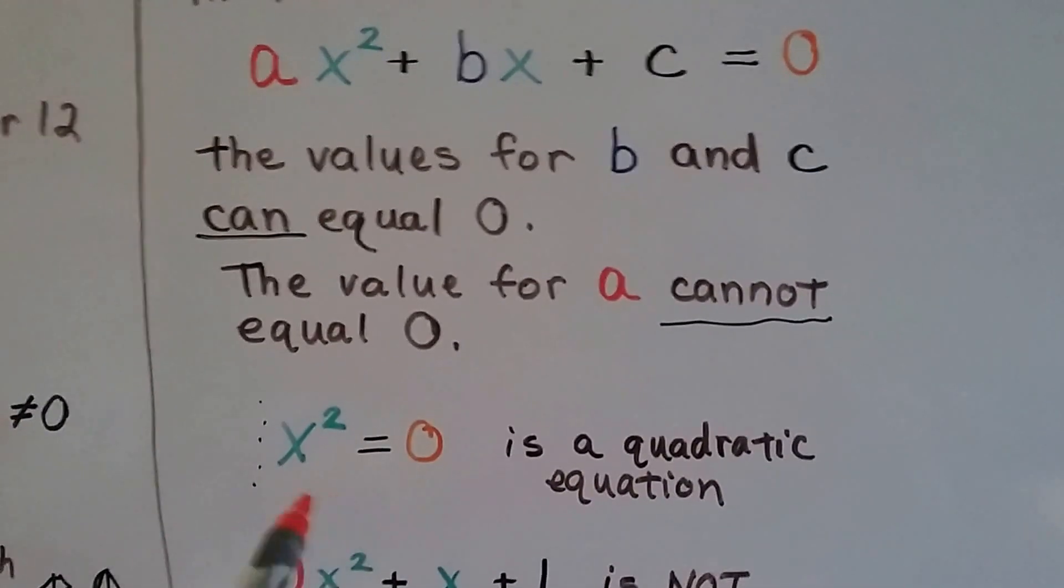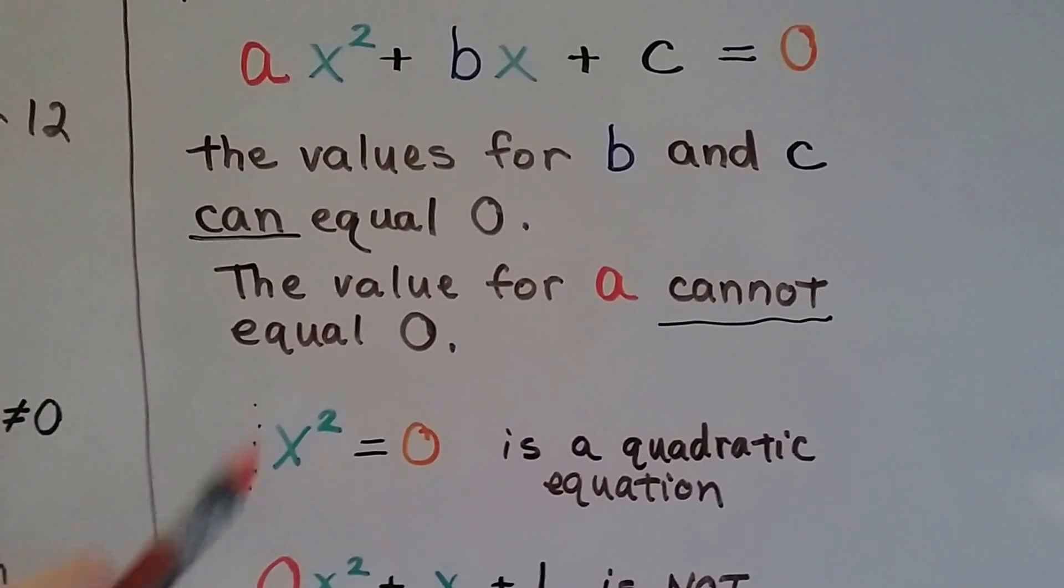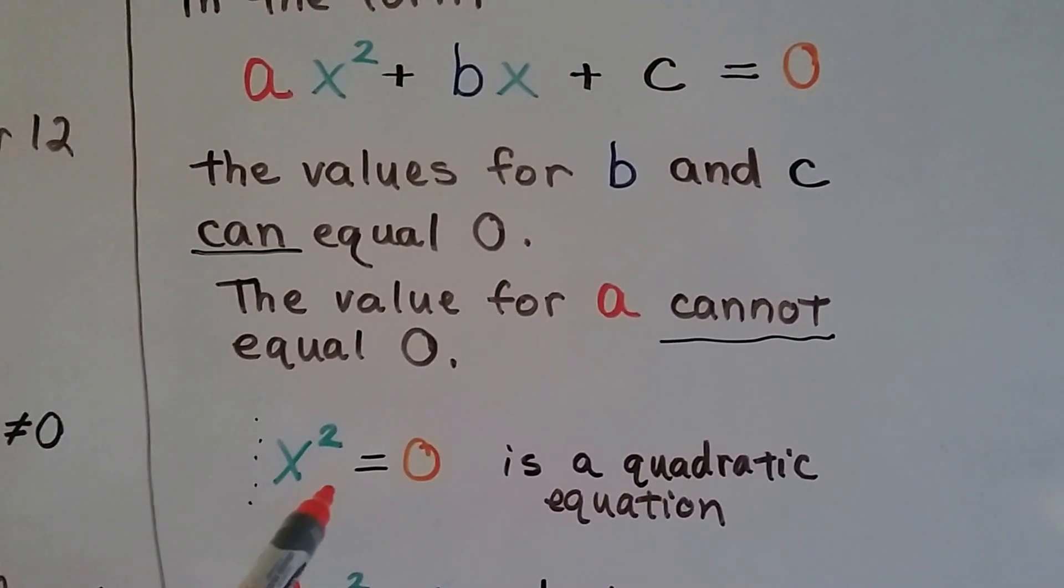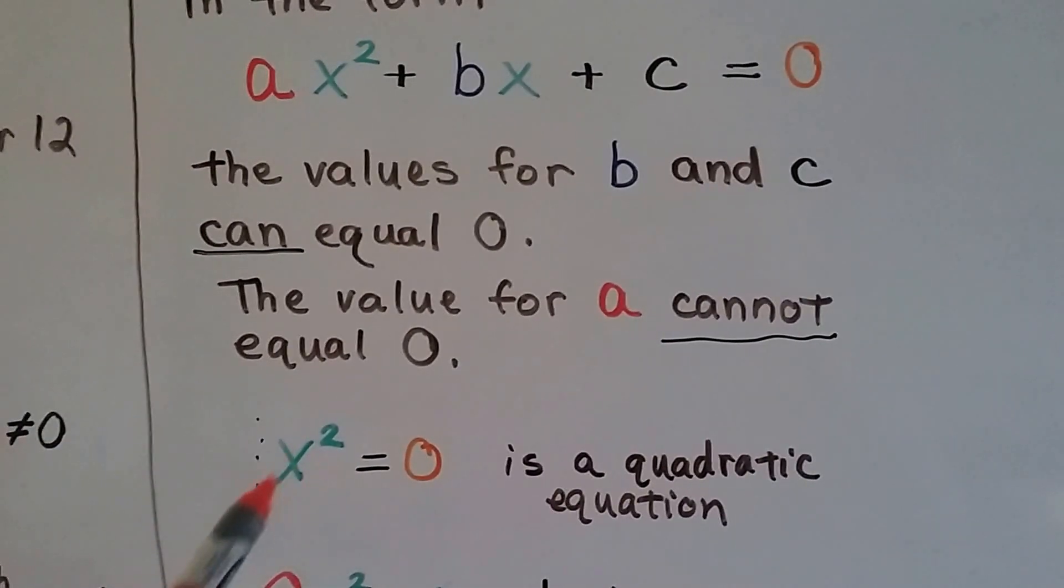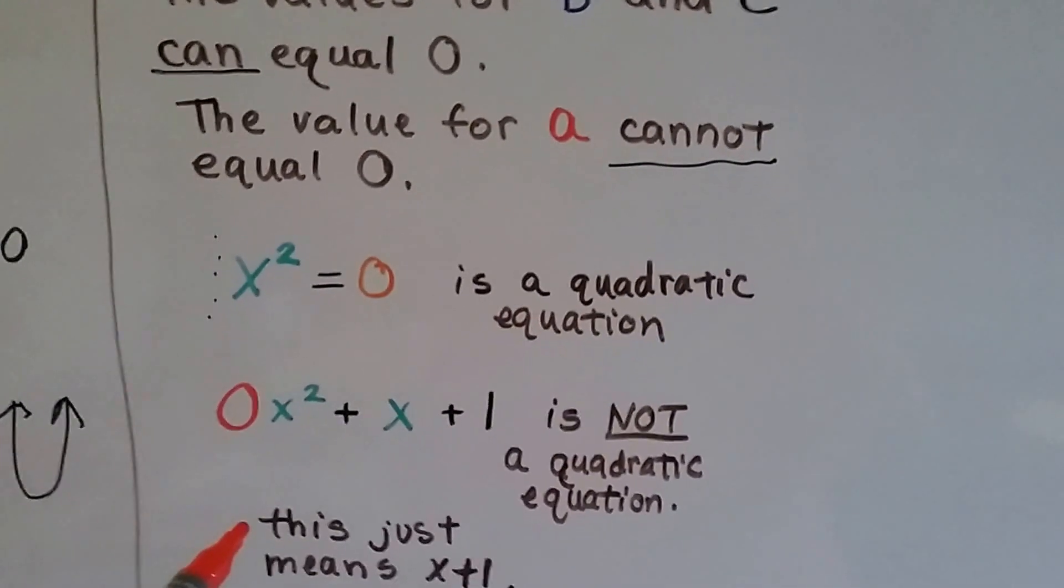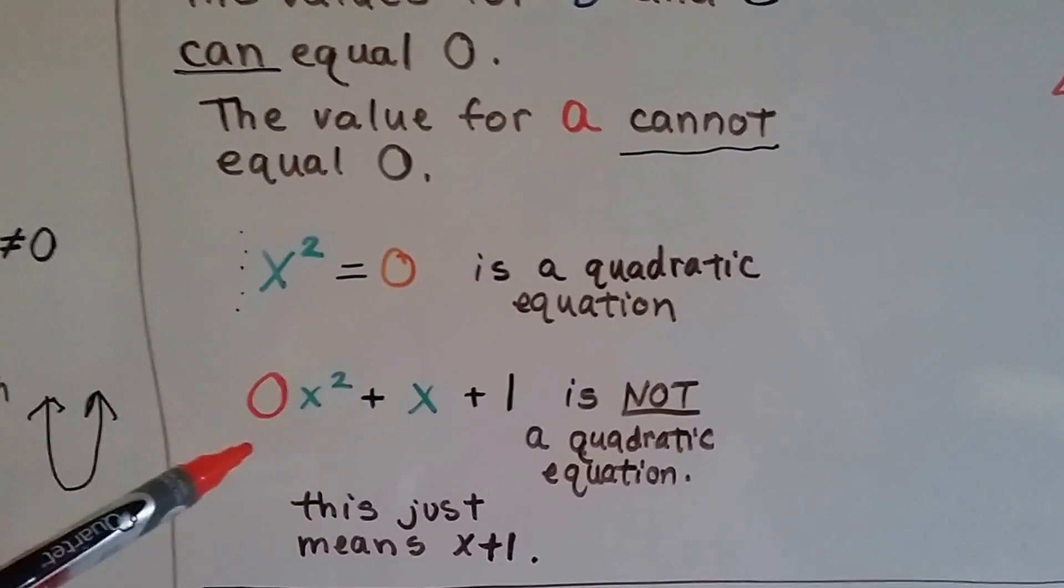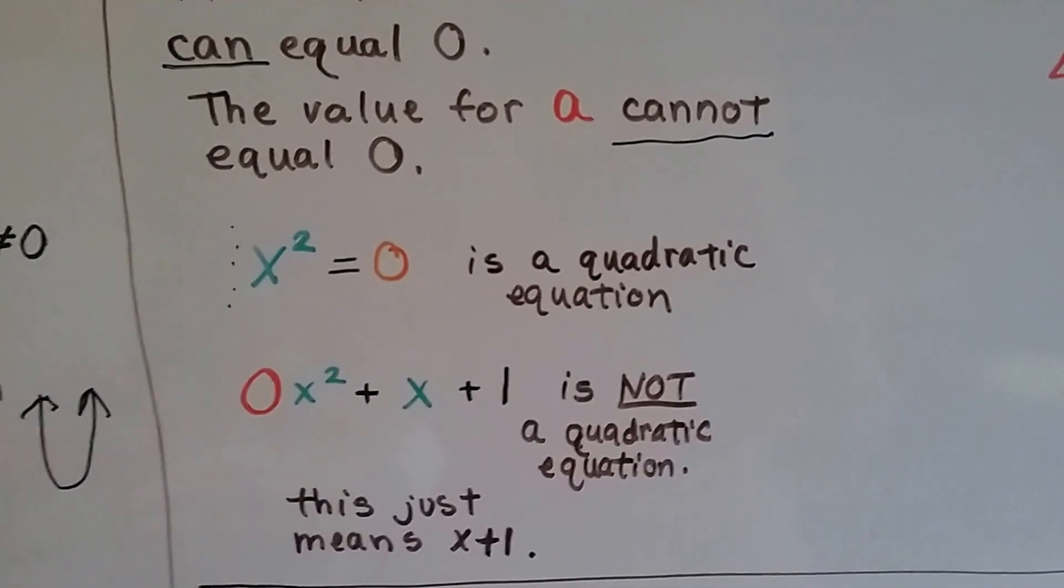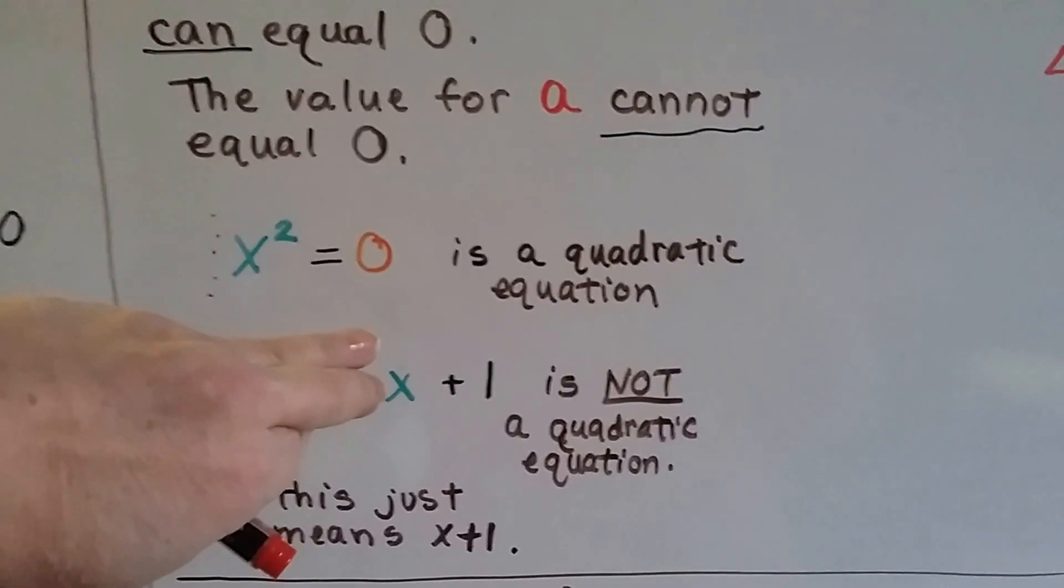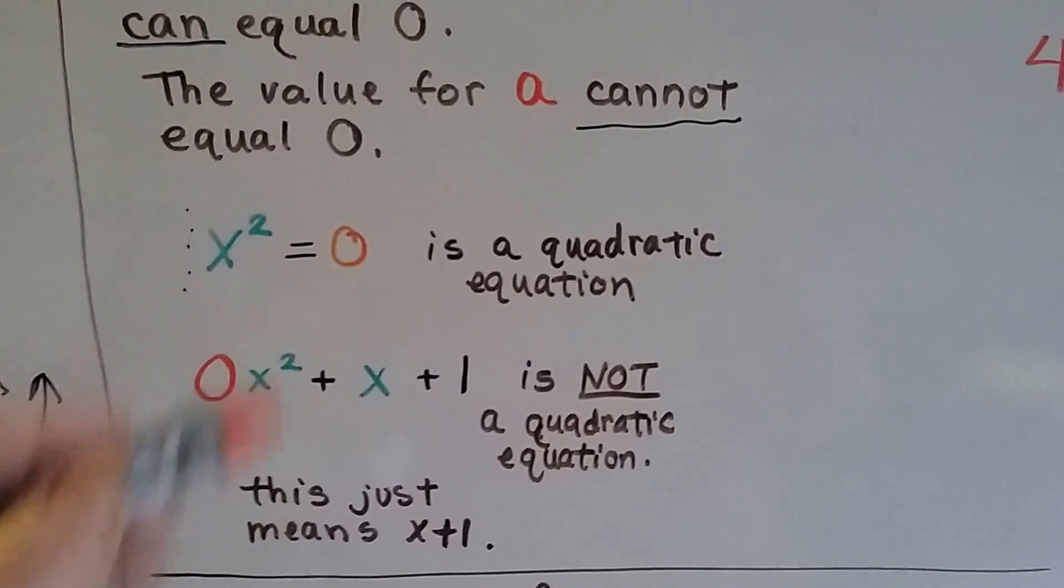The value for a cannot equal zero. So if we saw this, this is a quadratic equation. We've got our invisible one coefficient here, don't we? It just means that b equals zero and c equals zero. So all we have is the x squared. That's okay. That's a quadratic equation. But this is not. Because if a is zero, then that means zero times x squared, that means zero. Zero times x squared is zero. That means our equation is really just x plus one and that's not a quadratic equation. We need that x squared there, see?